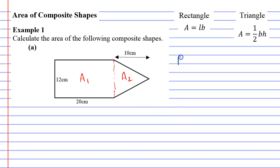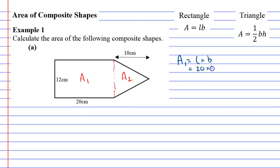A1: the area of a rectangle is given by the formula L times B, which basically means to multiply together the length and the breadth. So we've got a side of 20 and a side of 12. 20 times 12 is 240 centimeters squared. So there's the area of our rectangle.